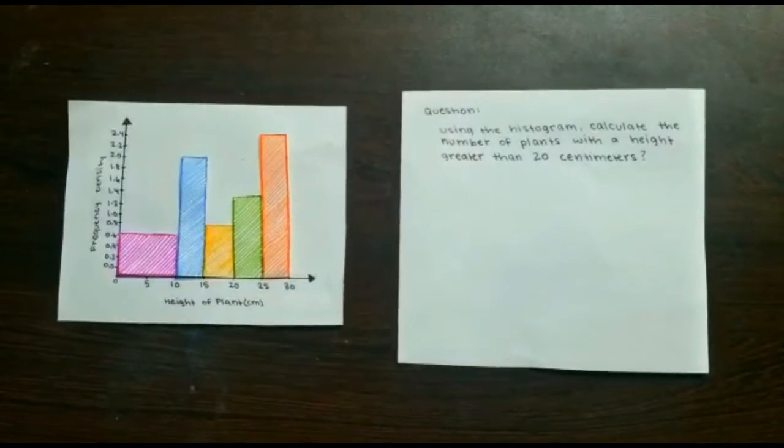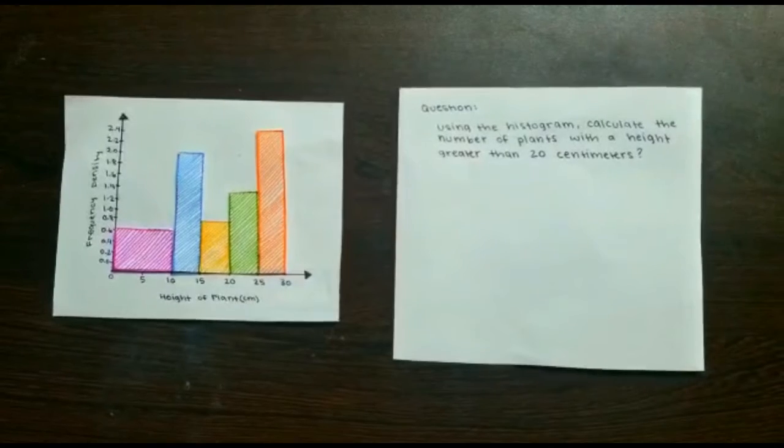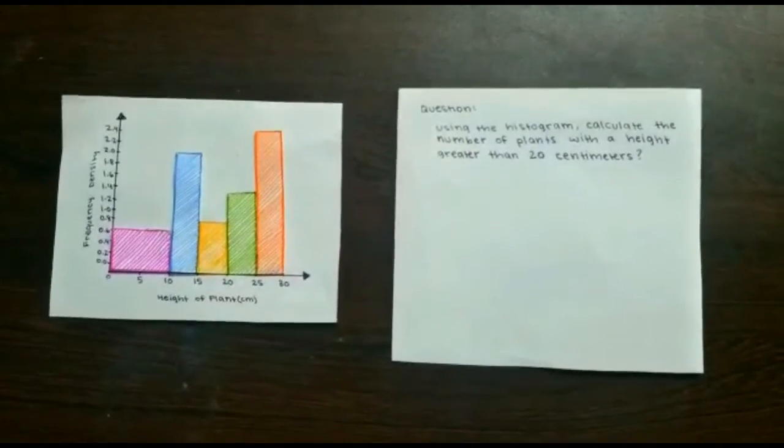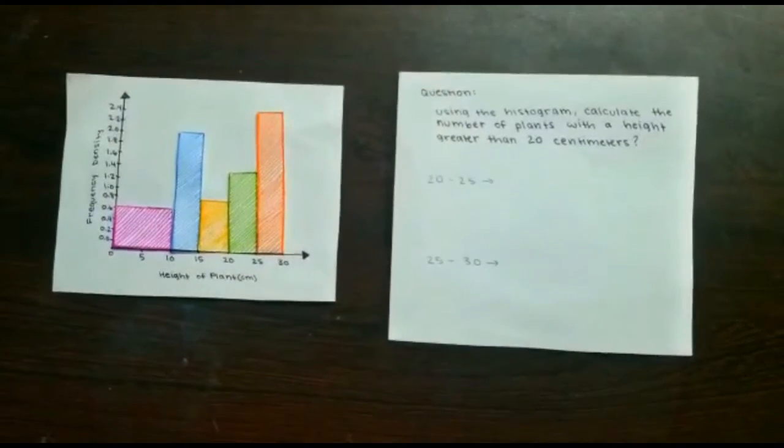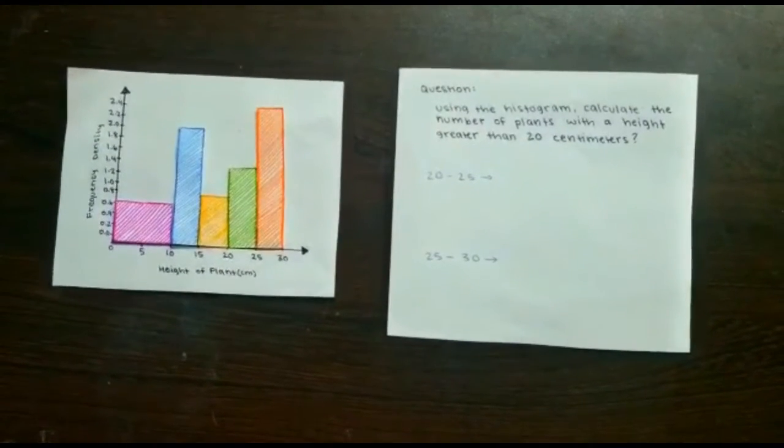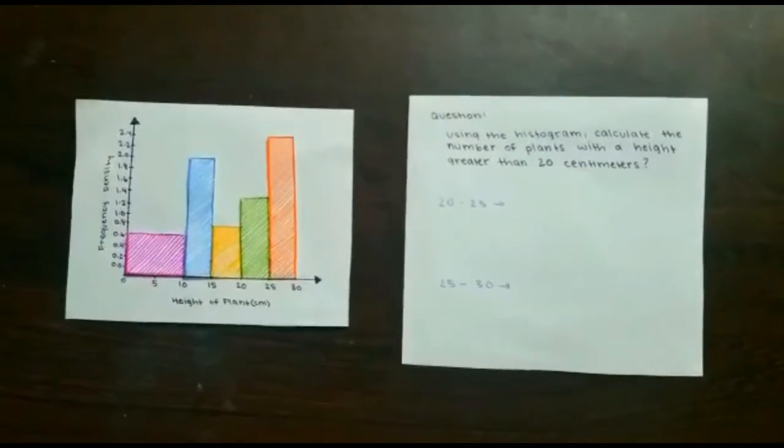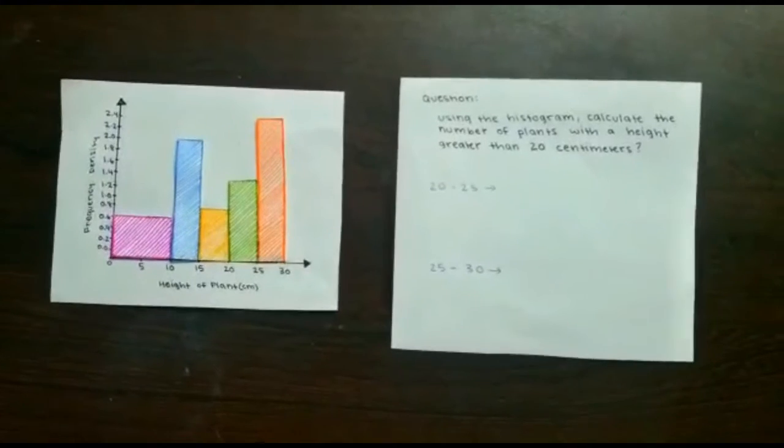Now for a question. Using the histogram, calculate the number of plants with a height greater than 20 centimeters. On the histogram, there are two groups of plants with a height greater than 20 centimeters: 20-25 and 25-30. Since we have to use the graph, we need to use the frequency density and group width to calculate the frequency for each and then find the sum.